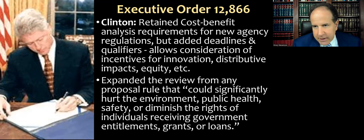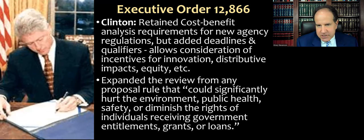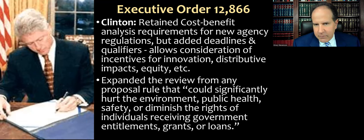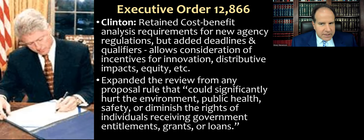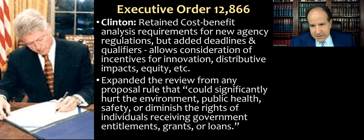Clinton came along in the early 90s and tweaked this a little bit with Executive Order 12866. For most administrative law classes or legislation and regulation classes, these are the only two executive orders you'll actually need to recognize by number. Clinton didn't do away with the Reagan framework — instead he retained it. He retained cost-benefit analysis requirements for new agency regulations, but he added some qualifiers and deadlines. In the Reagan era, if there was an agency like the EPA that was out of favor with the White House, sometimes they would just ignore their submissions for months or even, in one case, a couple of years, and not approve their proposed regulations. With Clinton's changes, if an agency never hears back from OIRA or the OMB after a certain number of weeks, they can proceed and can basically take it as an acquiescence.